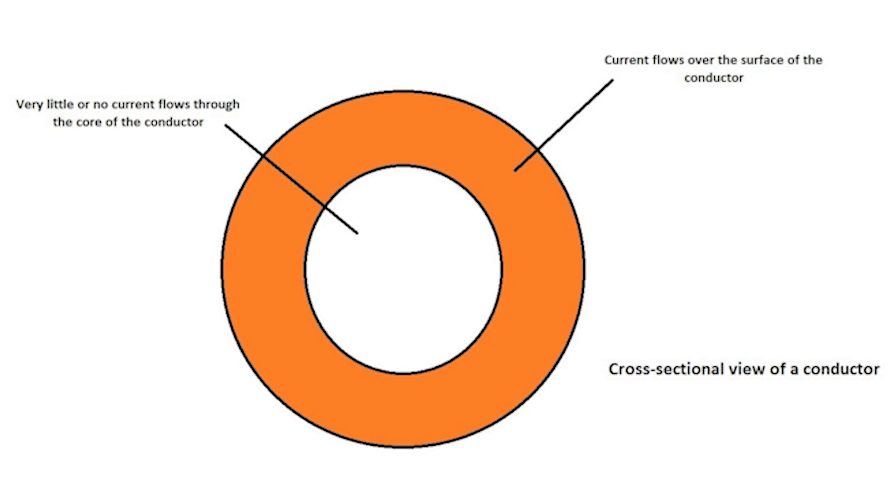When alternating current or AC flows through a conductor, something interesting happens, especially at high frequencies. Instead of the current spreading evenly across the wire's cross-section, it tends to concentrate near the surface of the conductor. This is called the skin effect.